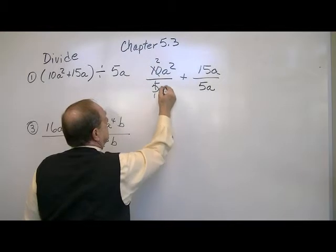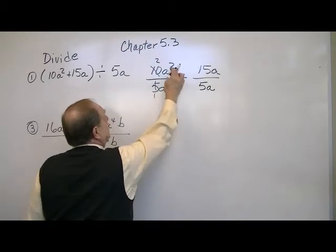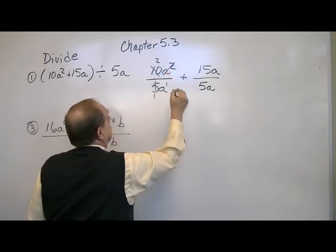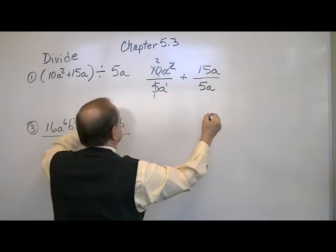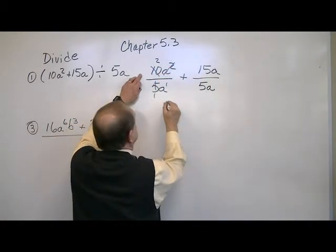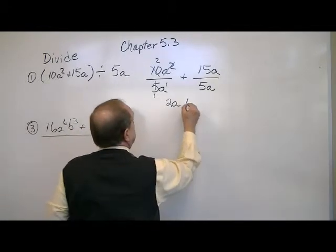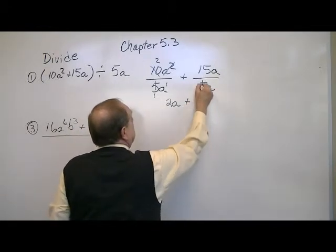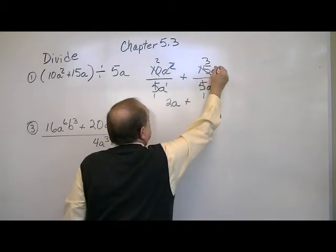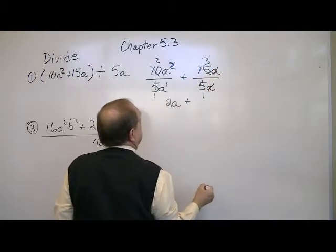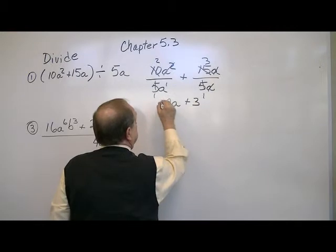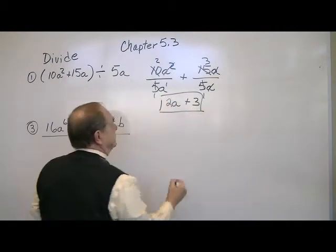Five will go into there once, five goes into there twice. A to the first bring it up, this just becomes an A. So your answer here is going to be 2A. Five into there once, five into there three times. And the A's cancel out.